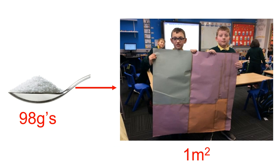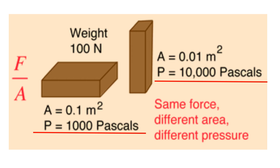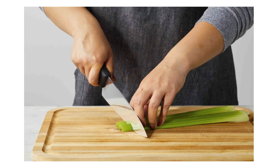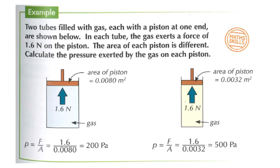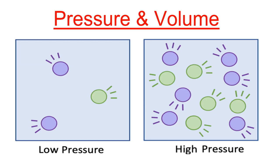The unit of pressure is the pascal (Pa), equal to one Newton per meter squared. We often use kilopascals because the pascal is very small. By changing the area, you change the pressure: a sharp knife cuts easily because it has a small area concentrating force; your finger with a large area produces much less pressure with the same force.